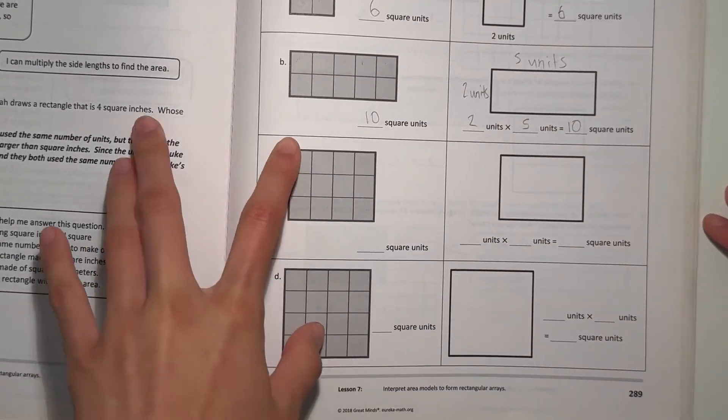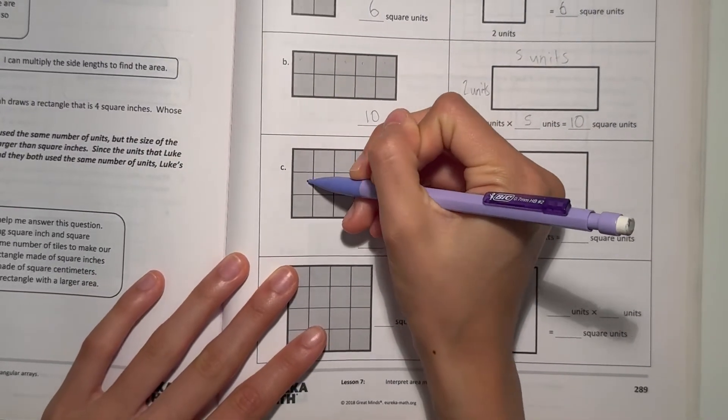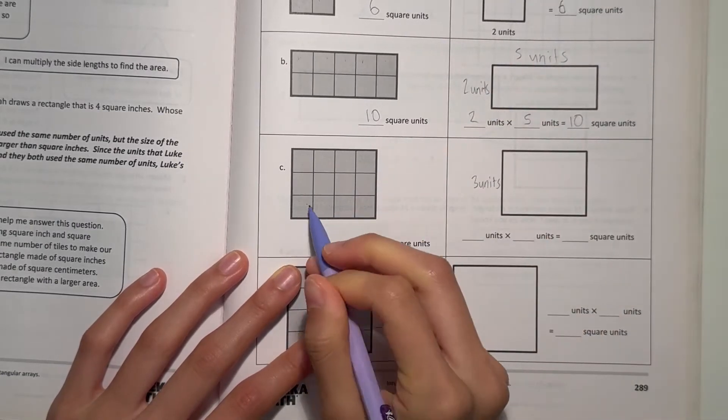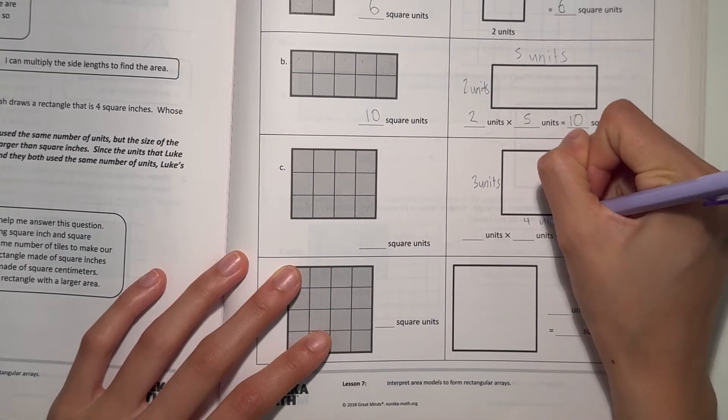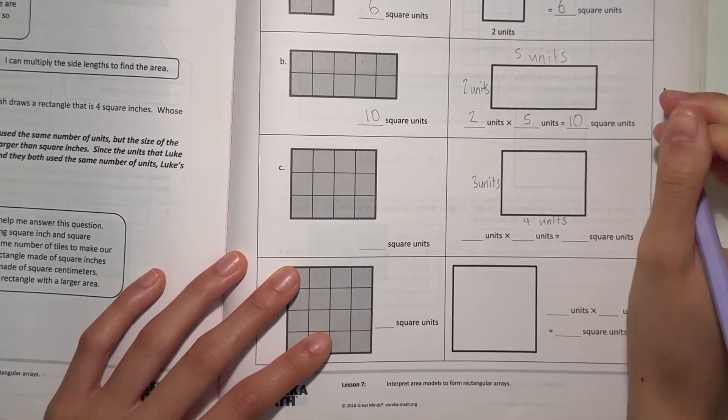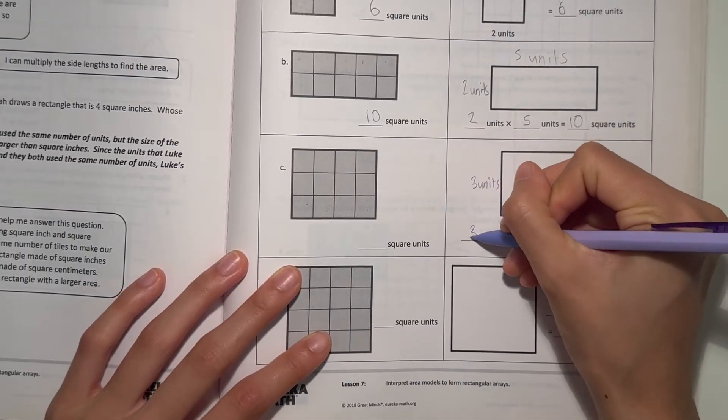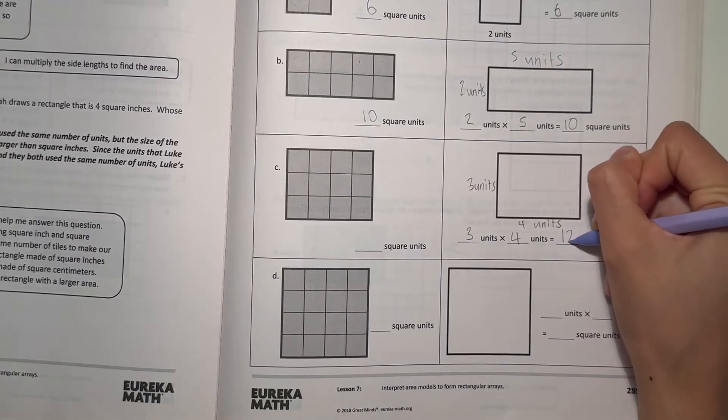Alright, let's see our side length. We have 1, 2, 3. That's 3 units on the side. And here it's 1, 2, 3, 4, 4 units. So to find our area, we multiply our length and our width. We have 3 units times 4 units equals 3 times 4 is 12. So it's 12 square units.